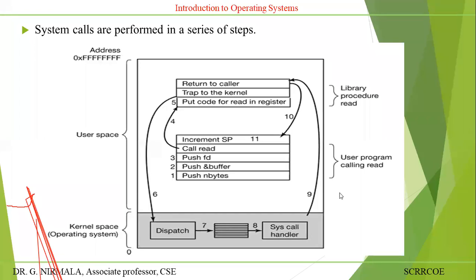These are the steps executed by the library procedure read operations. User program calls read — here read is a system call. Return is a predefined function in C language. These are the various series of steps to execute all user programs with the help of system calls. A system call is an instruction given by the user to the kernel of the operating system to execute your program.